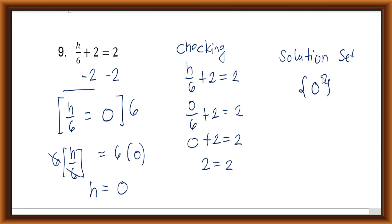That ends our lesson on solving linear equations. For one-step equations, we use either the addition property of equality or the multiplication property of equality. For two-step equations, we can combine both properties. This is your teacher — don't forget to subscribe to my channel so you will be notified about new videos. Thank you.